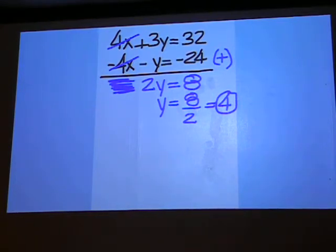Now put the 4 back in for y in one of the original equations. So 4x plus 3 times 4 equals 32.